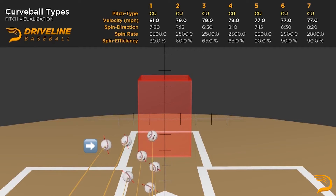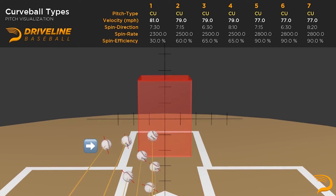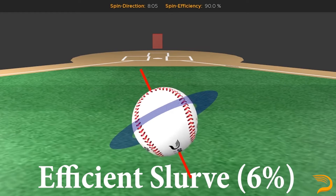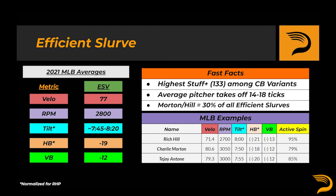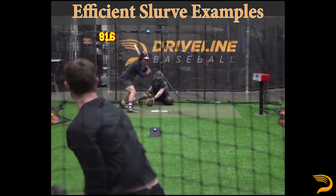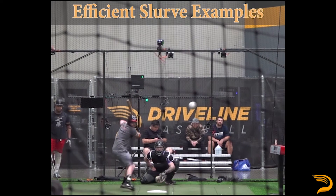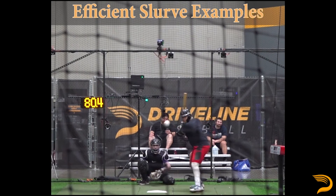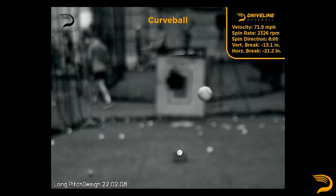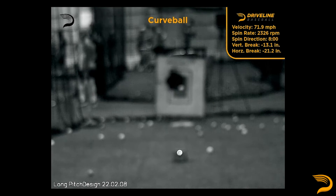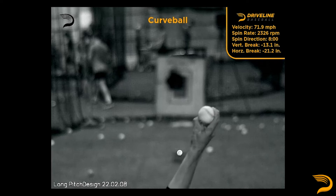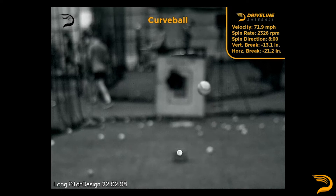Finally, to our efficient curveballs, starting with the efficient slurve. Due to the rate of lateral break, efficient slurves are rather rare, making up just six percent of classified curveballs across the past two years. Rich Hill and Charlie Morton alone have combined for 30 percent of all efficient slurves over the past two years. The pitch is the highest Stuff Plus of any curveball, showing the impact truly elite sweep can have on whiffs and lowering run values. At release, the pitch consists almost entirely of useful spin, with at least 60 percent of that coming from sidespin.